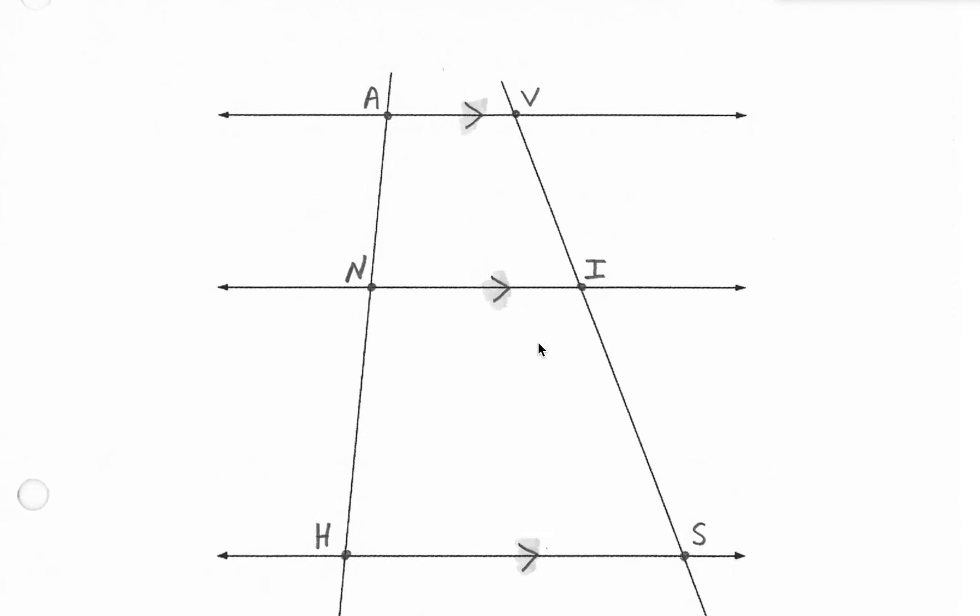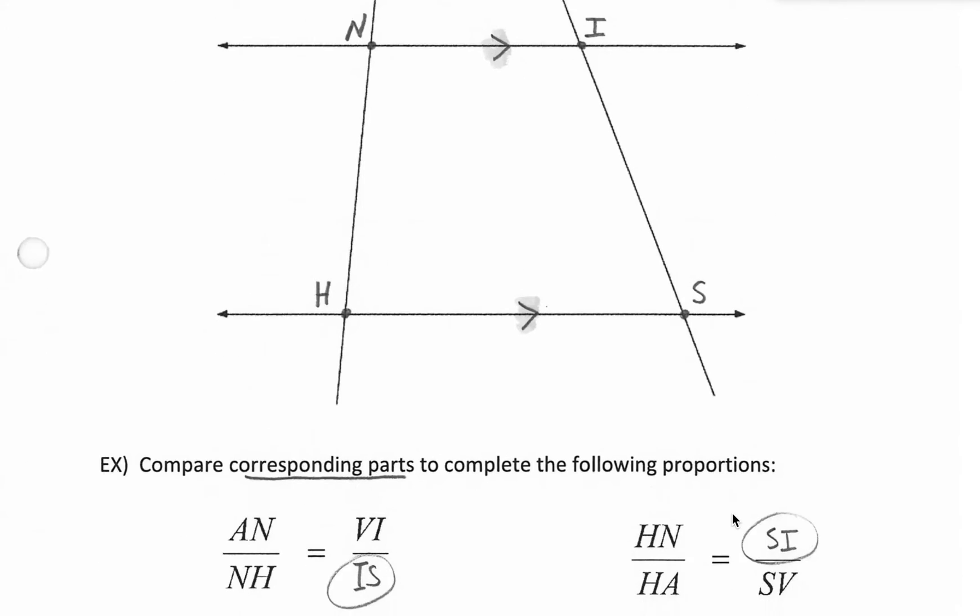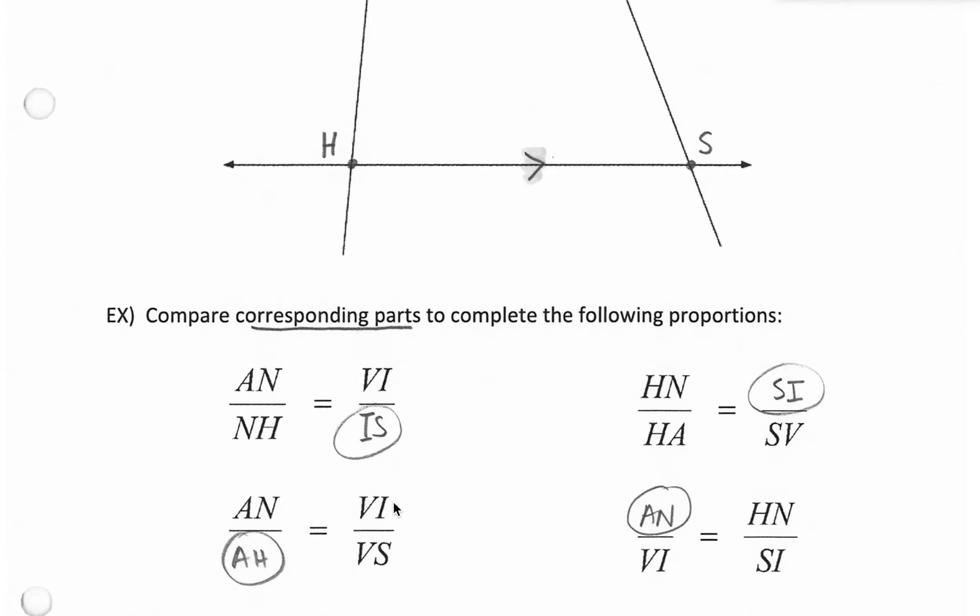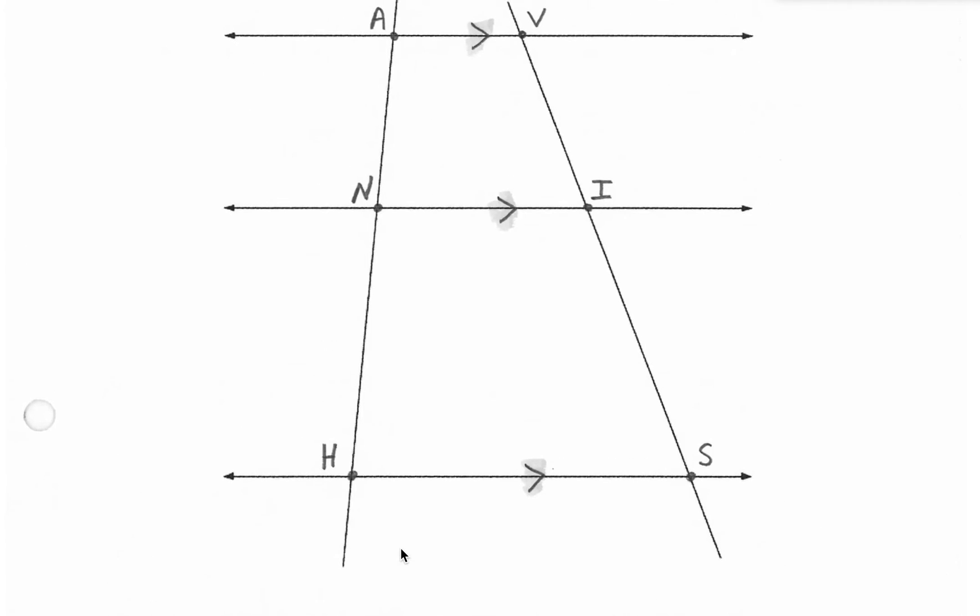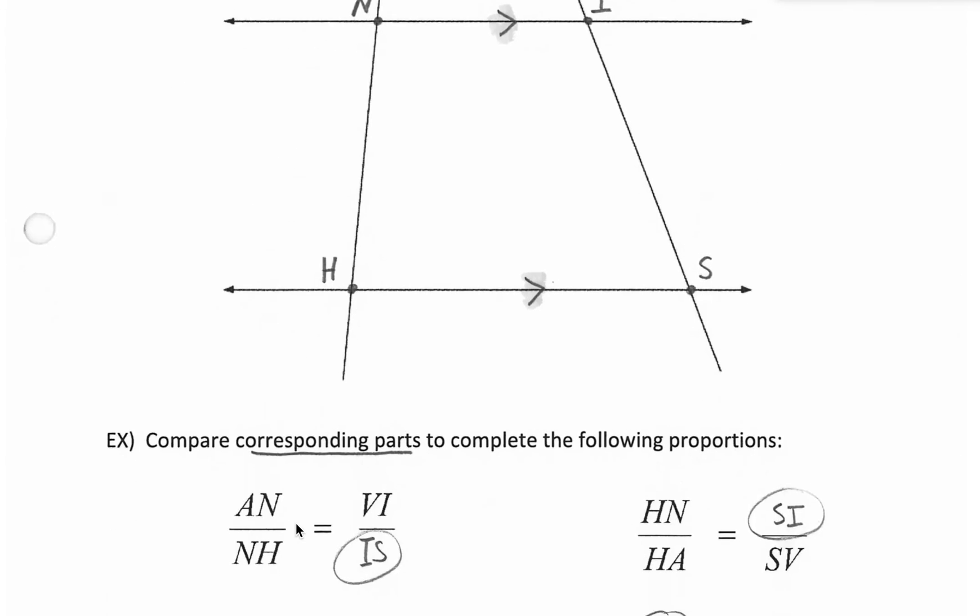HN to HA. HN to HA would be the bottom left to the total left. So to correspond, we would need the bottom right to the total right. SI to SV. Our third ratio here, VI to VS. VI to VS is the top right compared to the total right. So to correspond, we need the top left compared to the total left. AN to AH.